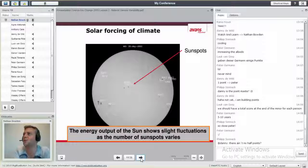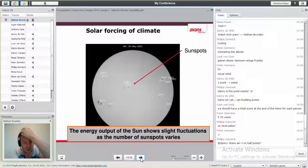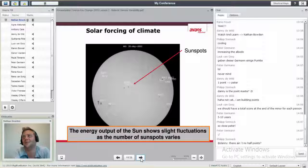Solar forcing from sunspots. Have you guys heard of sunspots? Here's a photograph of the sun. For Dutch people, the sun is a fireball in the sky. You don't see it very often. Here's a picture of the sun.